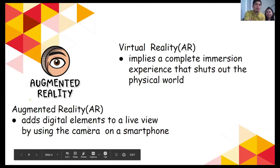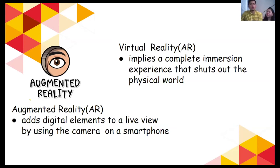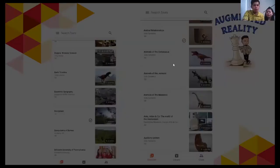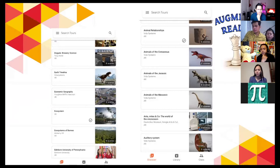AR adds digital elements to a live view using the camera on the smartphone, while VR gives you a complete immersion experience that shuts out the physical world — like you're truly at a location. Google Expeditions offers both AR and VR. Once you download the app from Google Play or the App Store, you have a search bar and content applicable to subjects like arts, culture, landscapes, and science. You can filter by AR or VR.